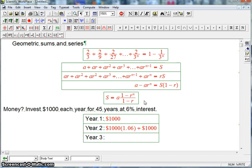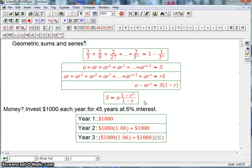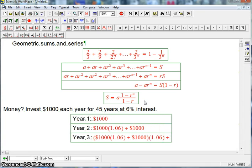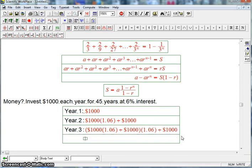Okay. Year 3, that whole thing... I'm going to pick up that whole thing with a Ctrl-C. That...everything in there is going to be multiplied by 1.06. And then I'm going to add $1,000.